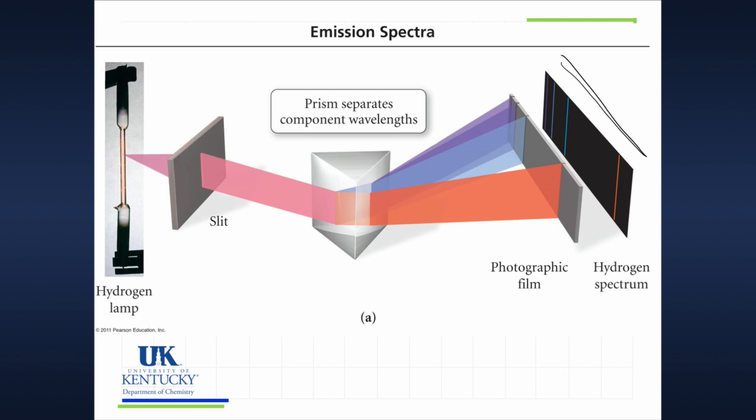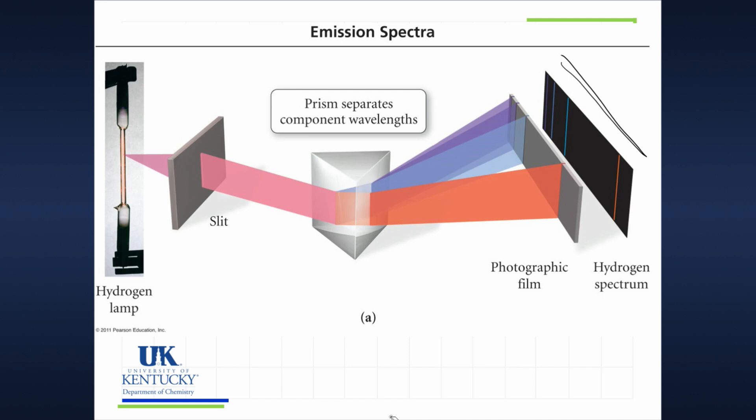The observation is not the end-all be-all. We want to explain why. Why do we have these lines? And Bohr was a scientist who came along and said, here's what I think is happening.